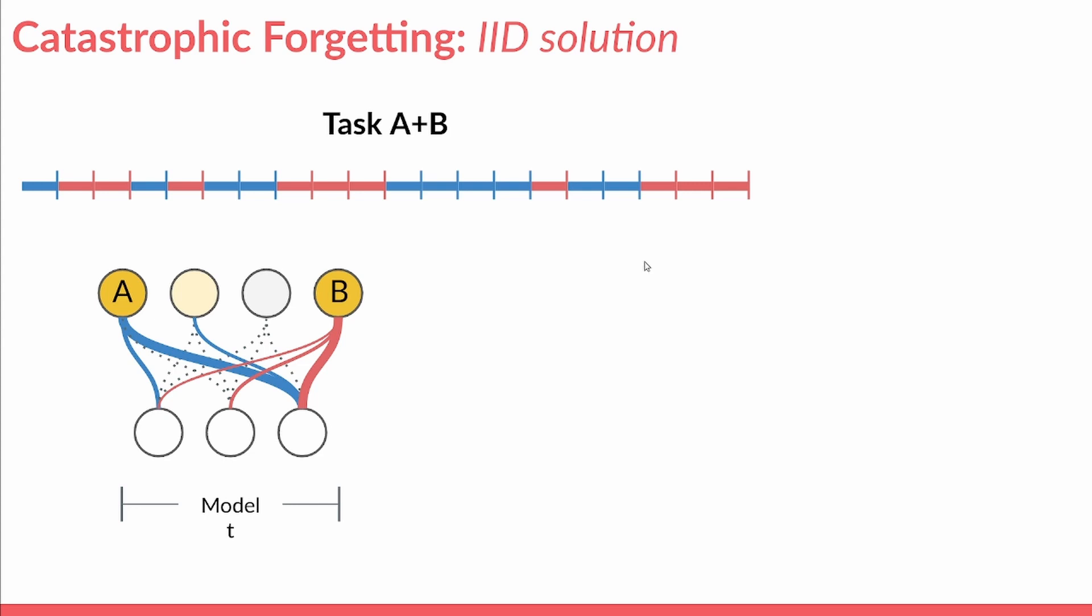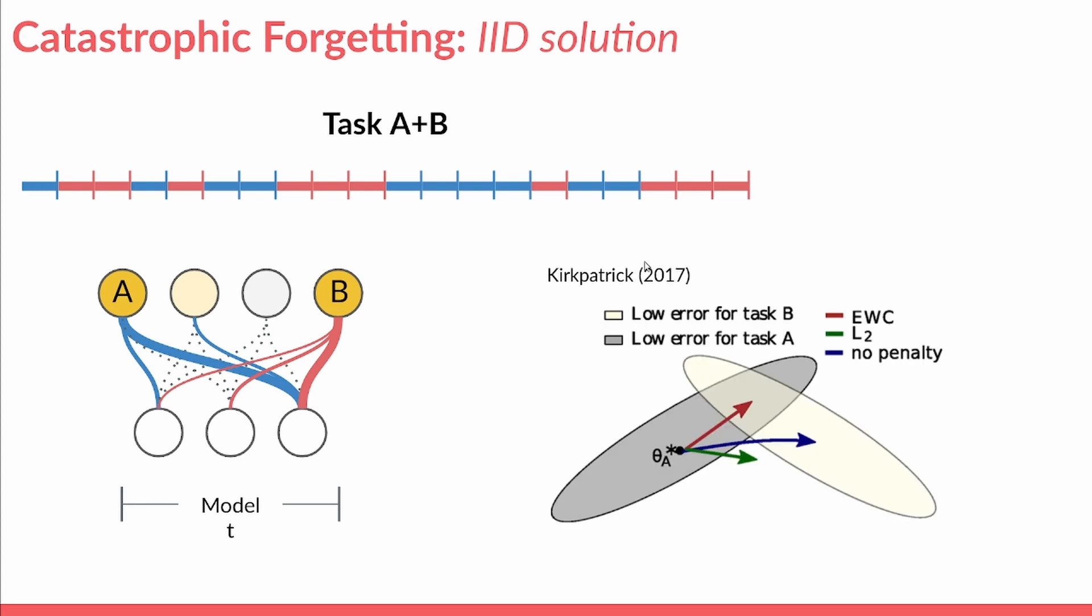Other solutions include methods which attempt to approximate IID training, like replay, or that regularize or constrain learning in some way.